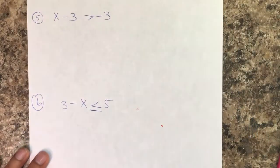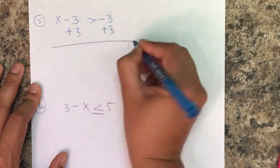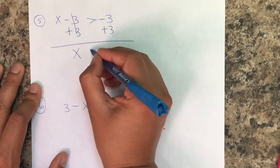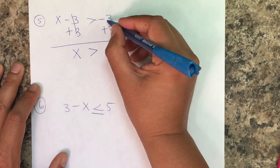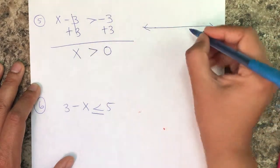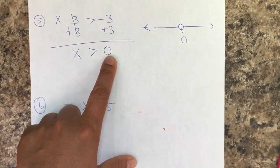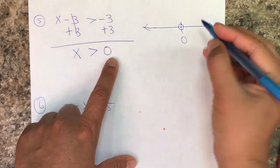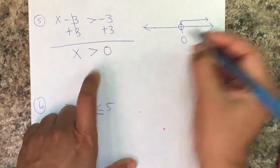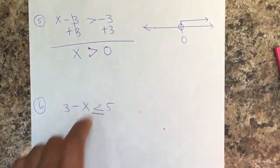Next: we're subtracting three, so the opposite is to add three. There's no multiplication or division by a negative, so the symbol stays the same. We end up with x is greater than zero. Draw the circle at zero, and since greater than means two dots — to the right — draw the arrow pointing right.